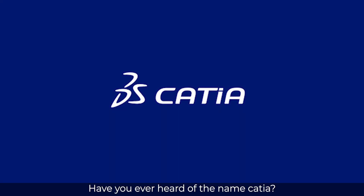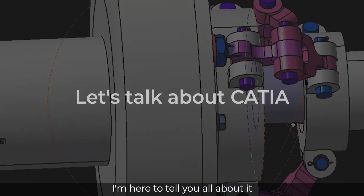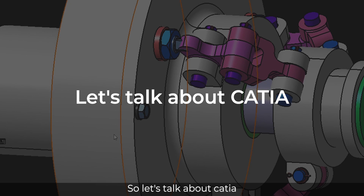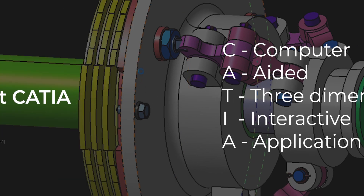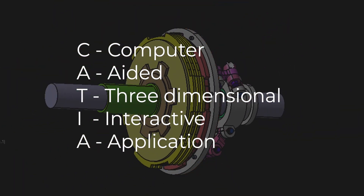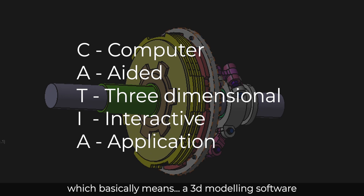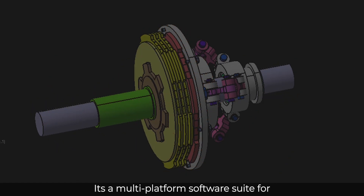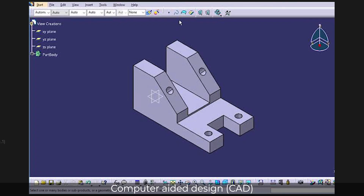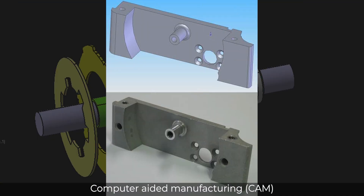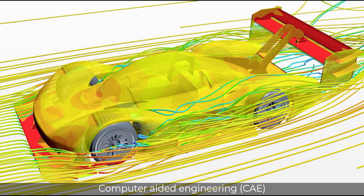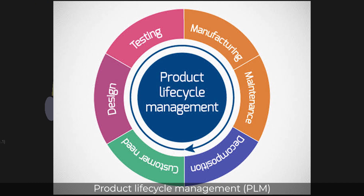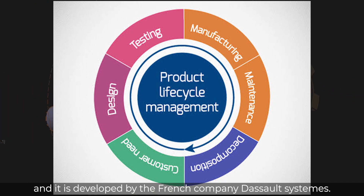Have you ever heard of the name CATIA? If you have not, then don't worry — I'm here to tell you all about it. CATIA stands for Computer-Aided Three-Dimensional Interactive Application, which basically means a 3D modeling software. It's a multi-platform software suite for computer-aided design, computer-aided manufacturing, computer-aided engineering, and product lifecycle management.